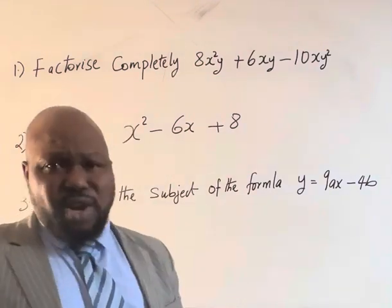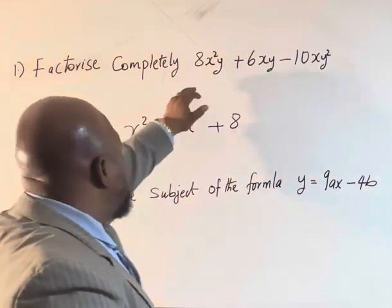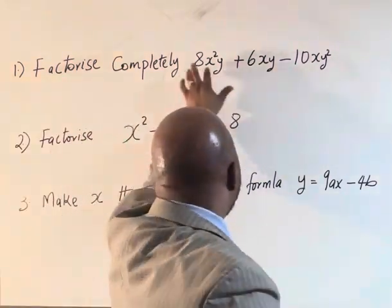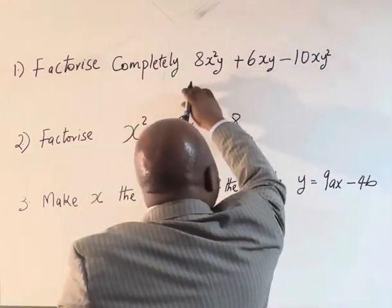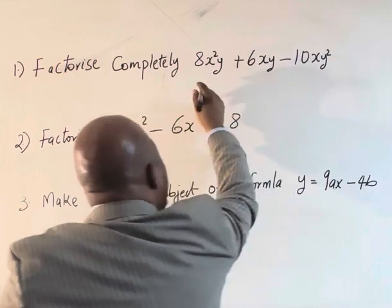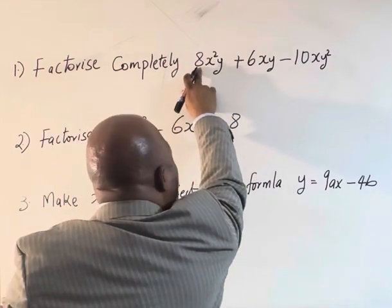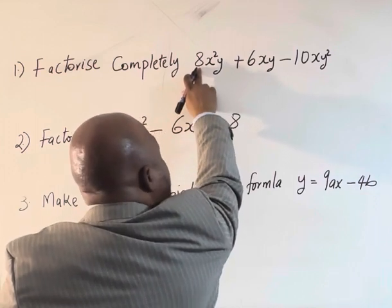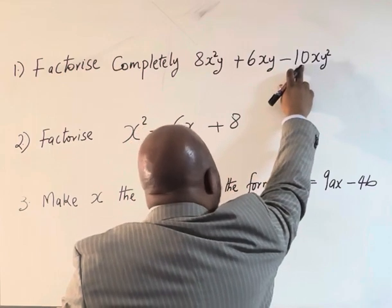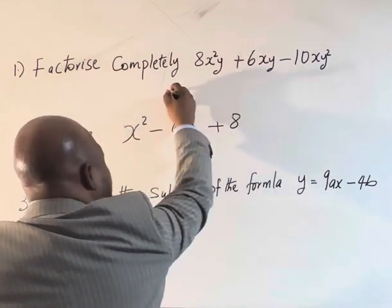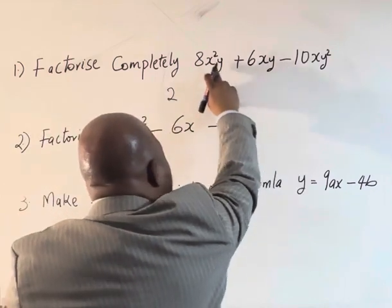Look for the common factors in all the terms that we have there. These steps we have here: two can go into eight four times, two can go into six three times, two can go into ten five times. So you can factorize that number two already.